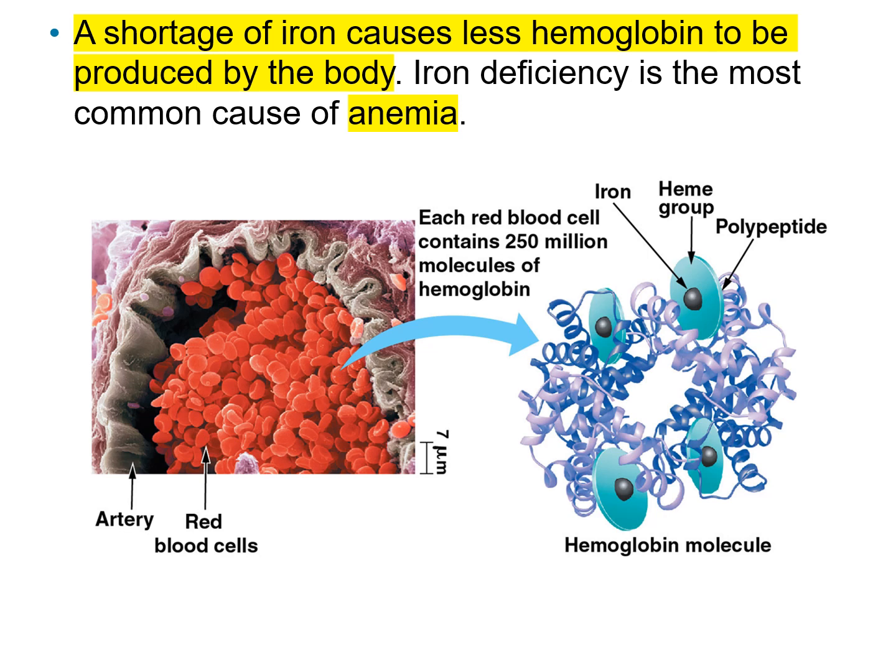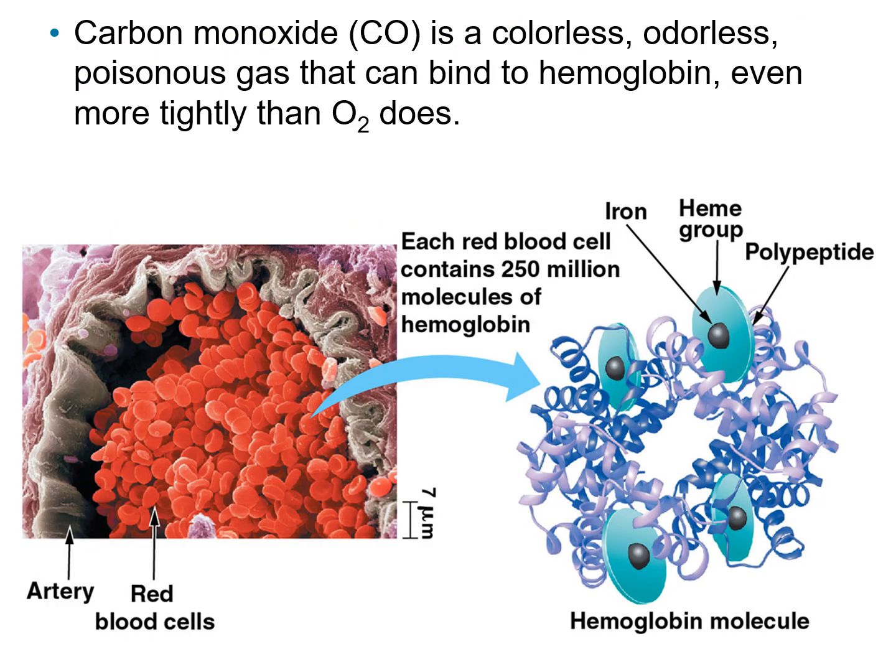Each red blood cell contains 250 million molecules of hemoglobin, but someone with low iron won't have that number. Therefore, iron is very important. Oxygen must bind to hemoglobin and has a strong affinity for it; oxygen does not dissolve in blood but binds to this molecule in the blood.